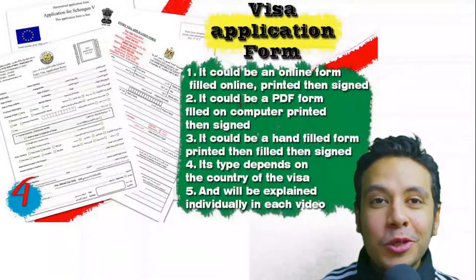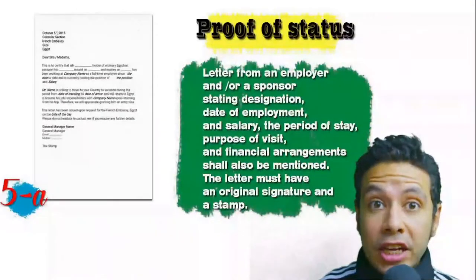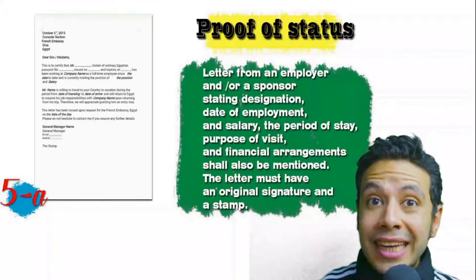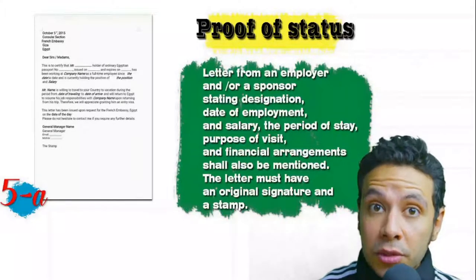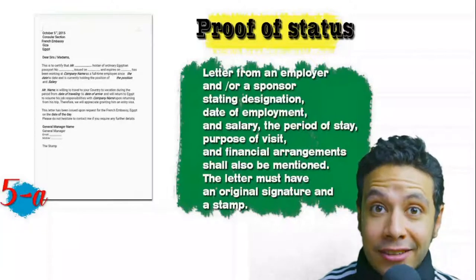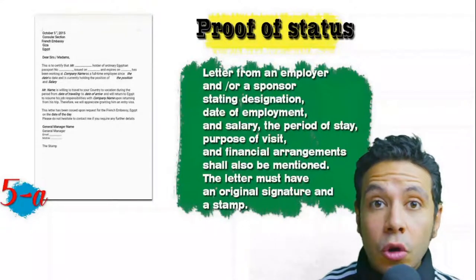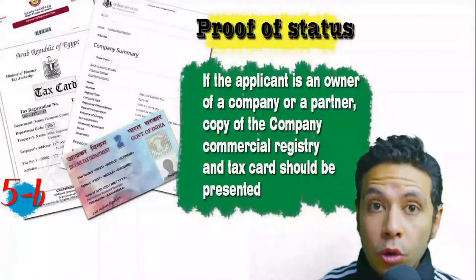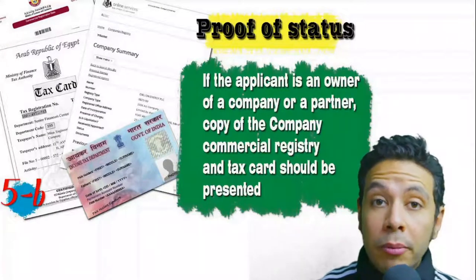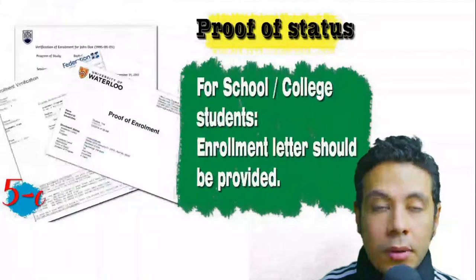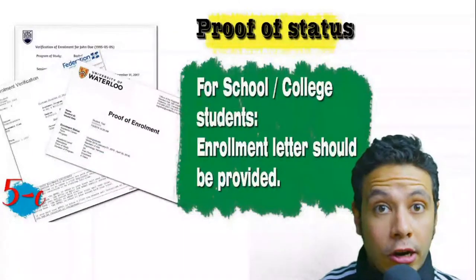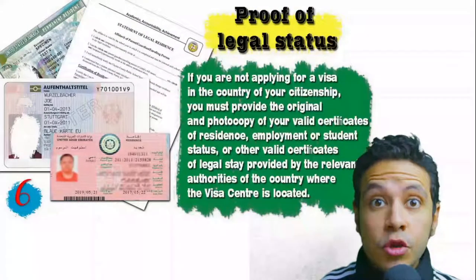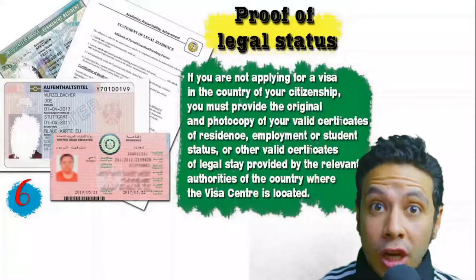In general cases you should print the form and fill it manually, but many countries now provide their application form online so you can fill it online, print it, and sign it. In most visa application processes you will be required to provide proof of status — for example, if you are an employee, provide a letter from your employer or HR department mentioning your name, work details, and salary, with address and contact numbers. All letters must have an original signature and stamp.